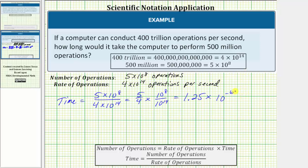So this is the time it takes to perform 500 million operations in scientific notation. The units would be seconds. Let's also write this using decimal notation.